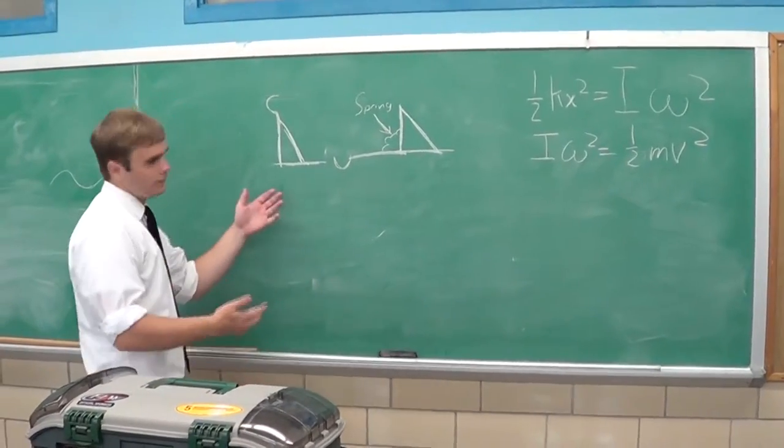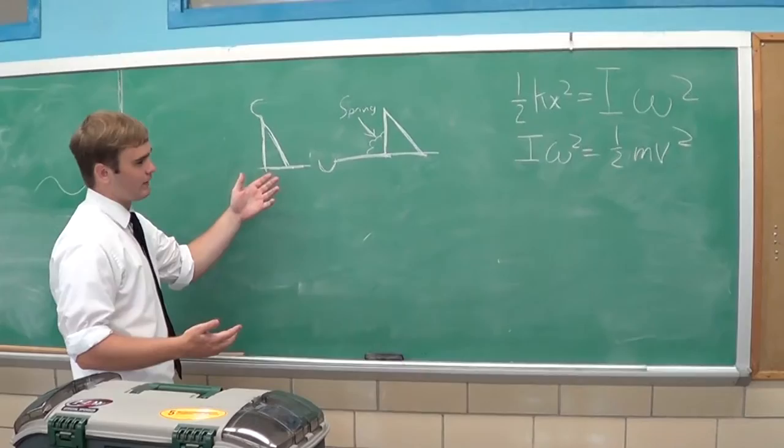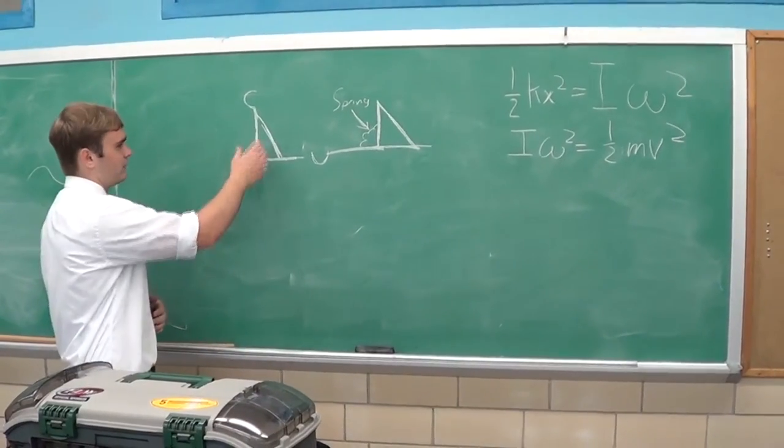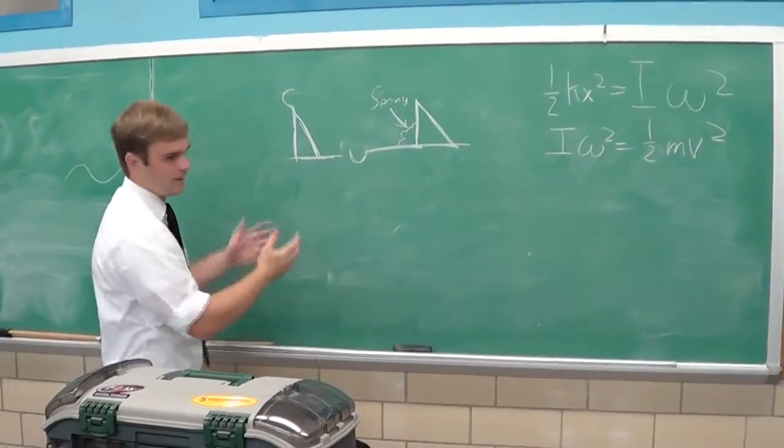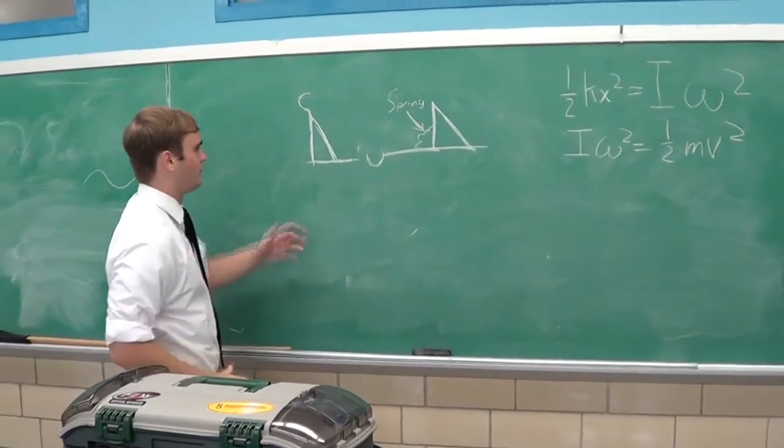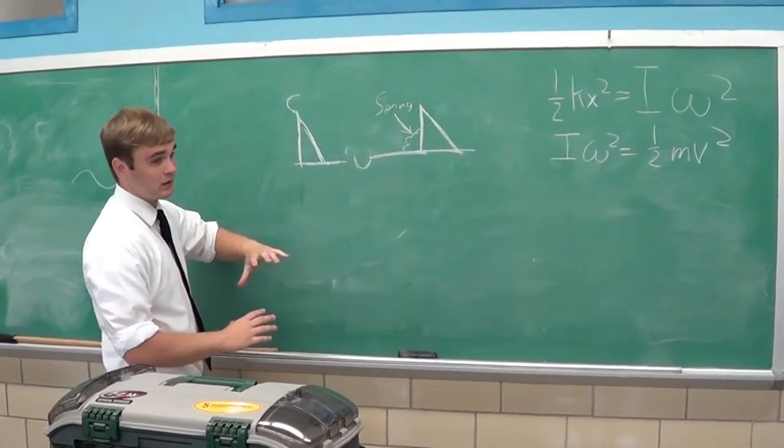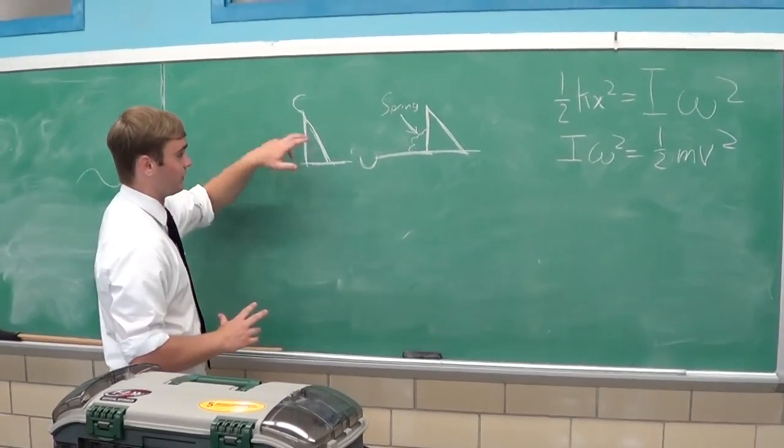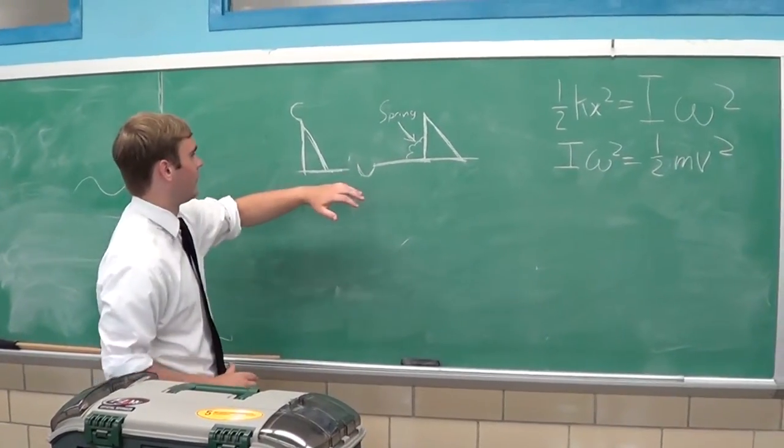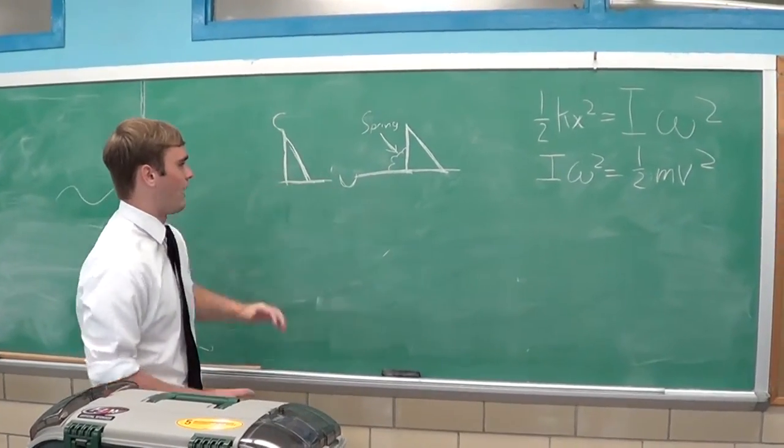So here you can see we have some diagrams of catapults. In this diagram right here, the catapult is at rest and the spring is also at rest, meaning that there is no potential energy to the system. However, as you can see, as the arm of the catapult gets pulled back,